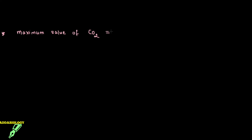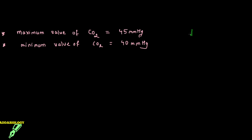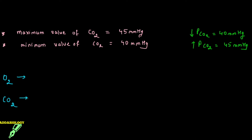How to remember the values? The maximum value of carbon dioxide that can be present in our body is always 45 mmHg. The minimum value of carbon dioxide present will be 40 mmHg. So wherever we talk about oxygenated blood — meaning less carbon dioxide — put it as 40 mmHg. When I say deoxygenated blood with high carbon dioxide, put it as 45 mmHg. For carbon dioxide, the lowest partial pressure is 40 mmHg and the highest partial pressure is 45 mmHg.